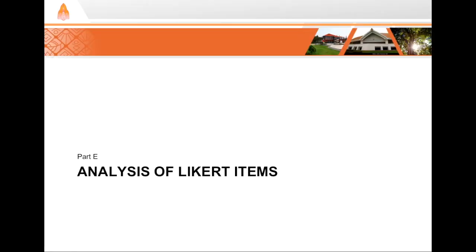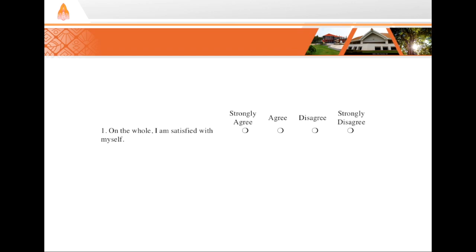Welcome to CPH session 18: descriptive statistics — summarizing and visualizing data, Part E: analysis of Likert items. Have you ever taken a survey with a question like this? A question item like this asks your level of agreement or satisfaction relative to a statement — perhaps from a psychological evaluation. So my question is: what is this type of question called? If you said a Likert scale, you're like most people, but you're wrong.